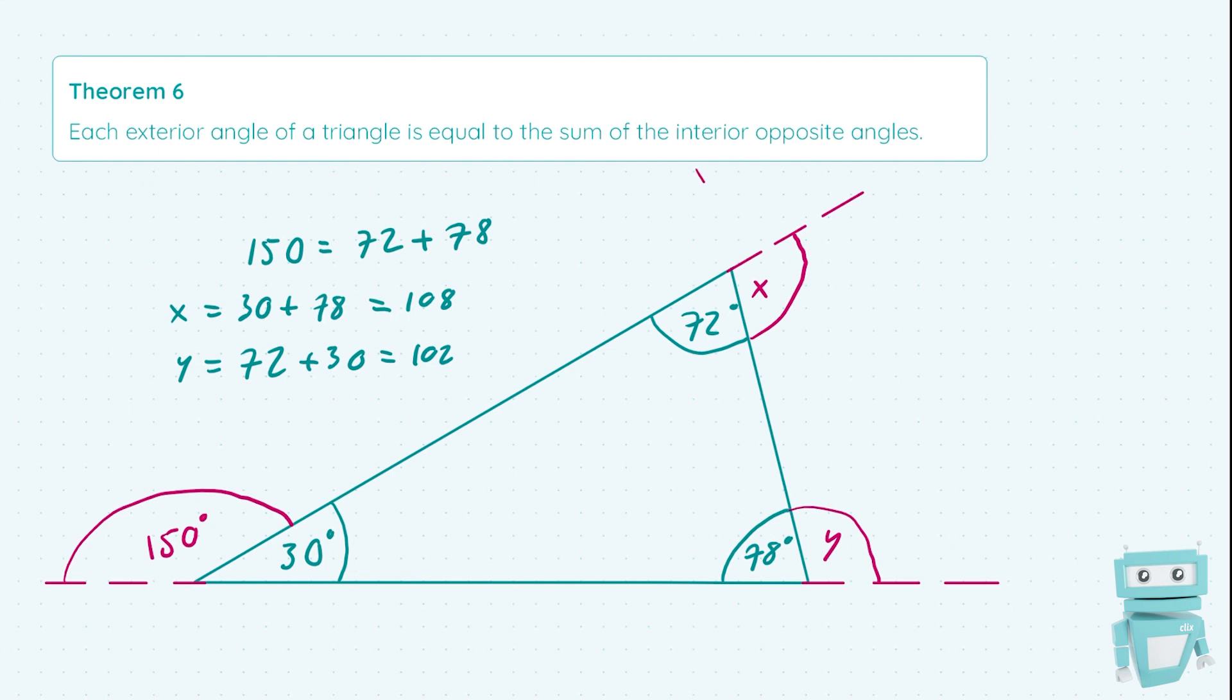For instance, if we had extended with a dotted line this way, we could have equally chosen this angle over here, which is also x. The same thing goes for the other sides as well, and this is because of our vertically opposite angles theorem, which is Theorem 1.